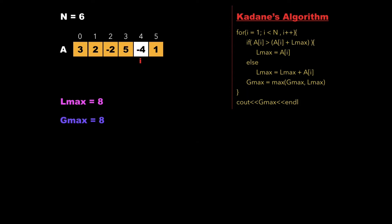Now i points to the value -4 and we check similarly whether -4 is greater than 4. Since -4 is less than 4, we update lmax as 8 - 4 = 4. Since lmax is not greater than gmax, the value of gmax is not updated and we increment i.